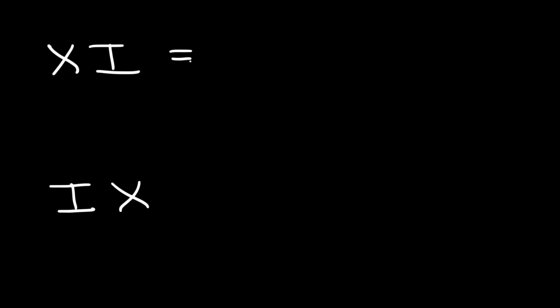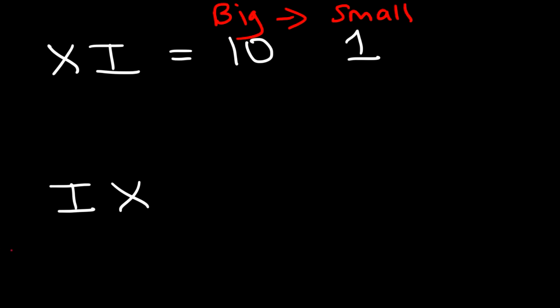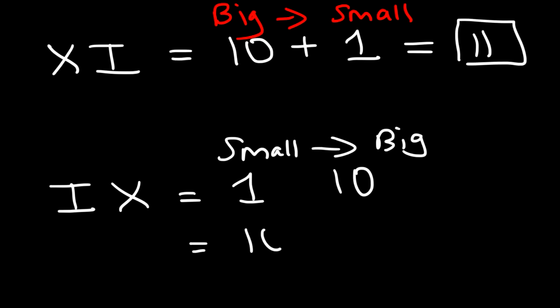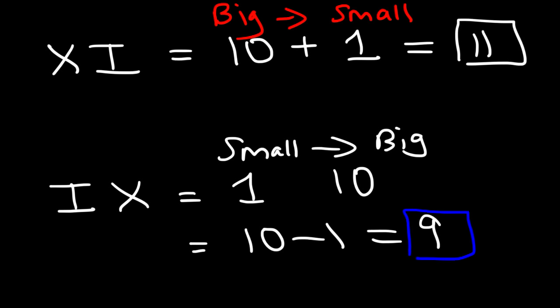Try these two examples: XI and IX. X is 10 and I is 1. For XI, we're going from a big number to a small number, so we add: 10 plus 1 is 11. For IX, I is 1 and X is 10 — we're going from small to big, so we subtract: 10 minus 1 is 9. So IX is 9 and XI is 11.